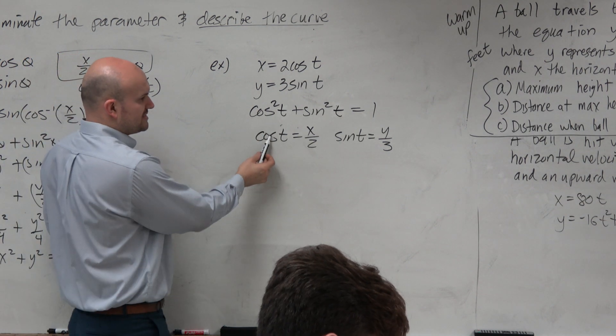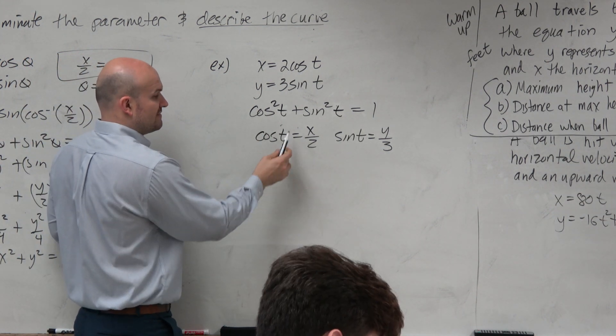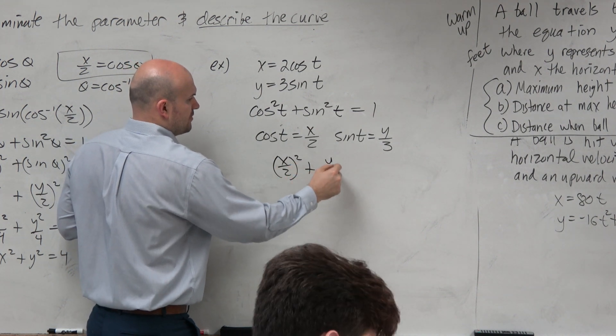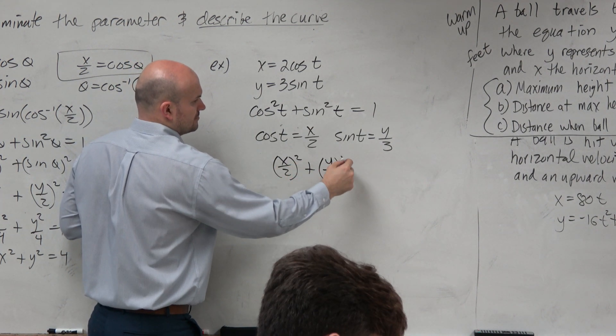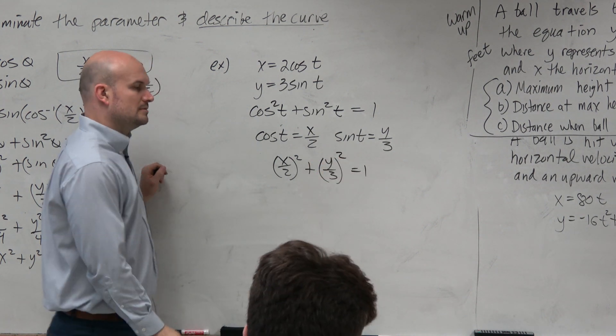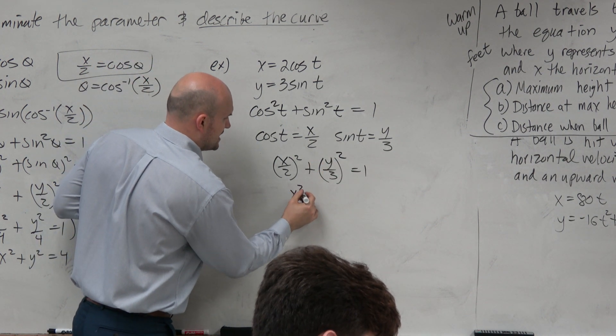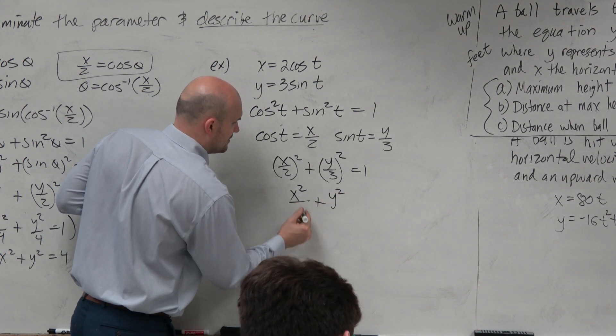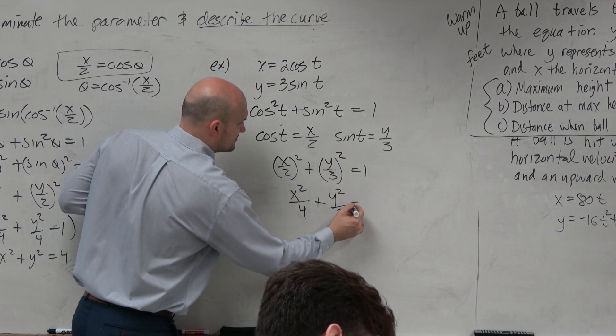So we can now replace our cosine with x divided by 2. This gives me x over 2 squared plus y over 3 squared. So therefore, this gives us x squared over, sorry, x squared over 4 plus y squared over 9 equals 1.